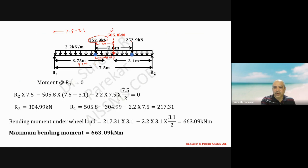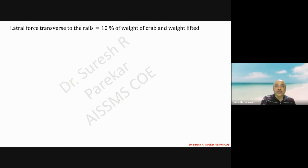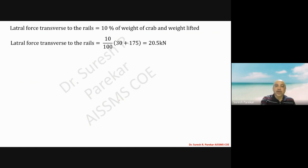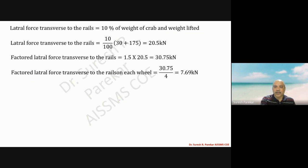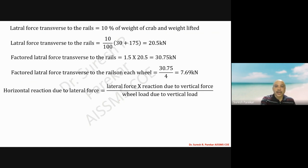Maximum bending moment is 663.09 kilonewton meter. Lateral load is 10 percent of crab and lifted weight, giving 20.5 kilonewton transferred along the Y-Y direction to the rails. Factored lateral load multiplied by 1.5 gives 30.75 kilonewton on four wheels, so 7.69 kilonewton per wheel. Horizontal reaction due to lateral force equals lateral force into reaction from vertical load divided by total wheel load from vertical load.